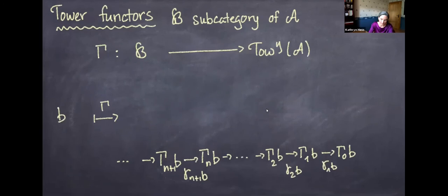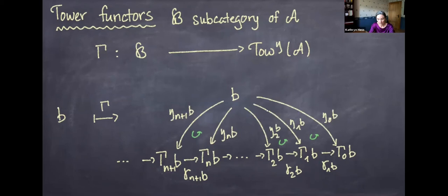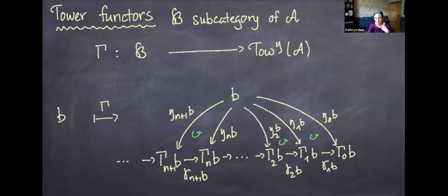Now, suppose we have some subcategory B of category A. A calculus takes an object in B and spits out a co-augmented tower in A. That is, we start with some object b in B and get a tower of objects in A — successive approximations to b. The gamma_Ns are all co-augmented under b itself, with morphisms connecting b to these various approximations.